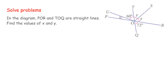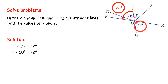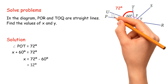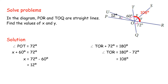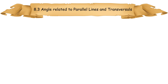Solve problems. Angle TOR plus 72 degrees equals 180 degrees. Angle TOR equals 180 degrees minus 72 degrees equals 108 degrees. 2y equals 108 degrees; y equals 54 degrees.